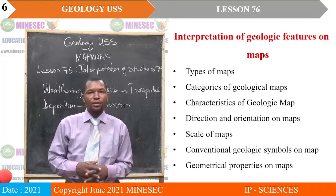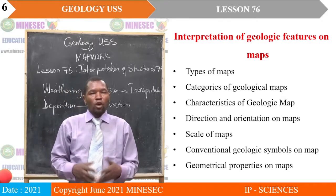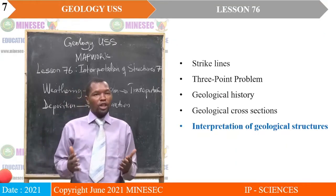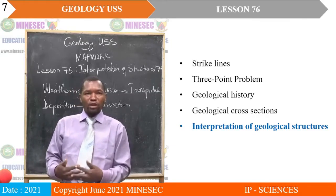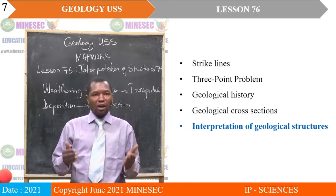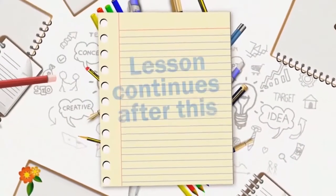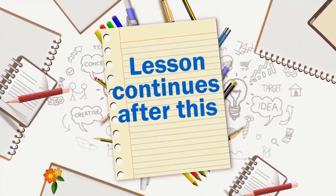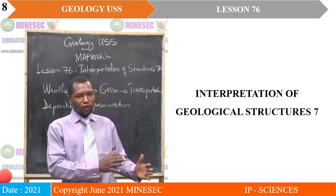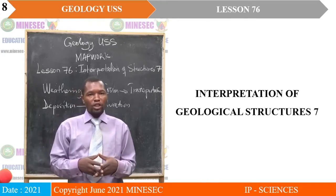We are still on map work, looking at interpretation of geologic features on maps. We saw the different types and categories of maps, and we have been working through strikes, three-point problems, geological history, as well as geological cross sections. We are now concentrating on interpretation of geological features. Our lesson today is titled Interpretation of Geological Structure 7. We have already treated the first six aspects: interpreting folds, igneous bodies, unconformities, and surface deposits.